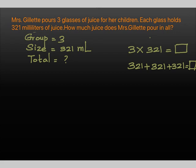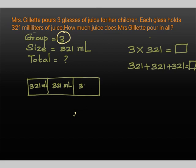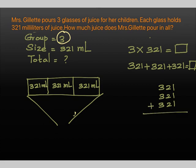For the tape diagram, since we know the number of groups is three, we draw three partitions: first, second, third. Each group has a size of 321 milliliters — so 321 ml, 321 ml, and 321 ml. What we have to find is the total. Let's add vertically: 1 plus 1 plus 1 is 3; 2 plus 2 plus 2 is 6; 3 plus 3 plus 3 is 9.